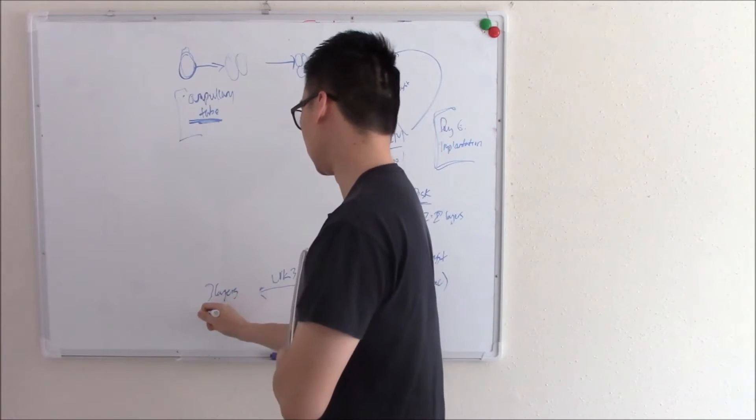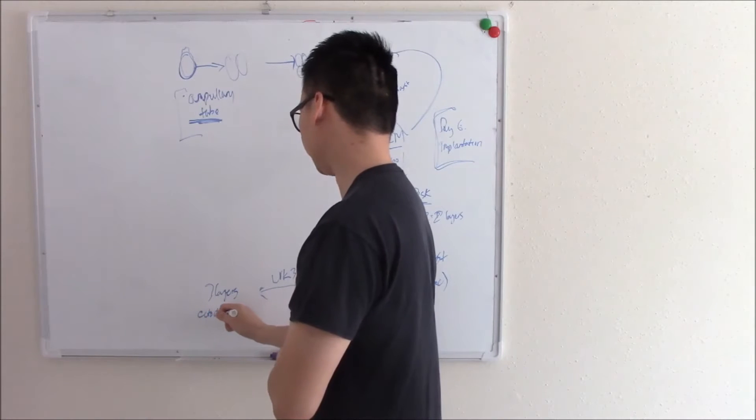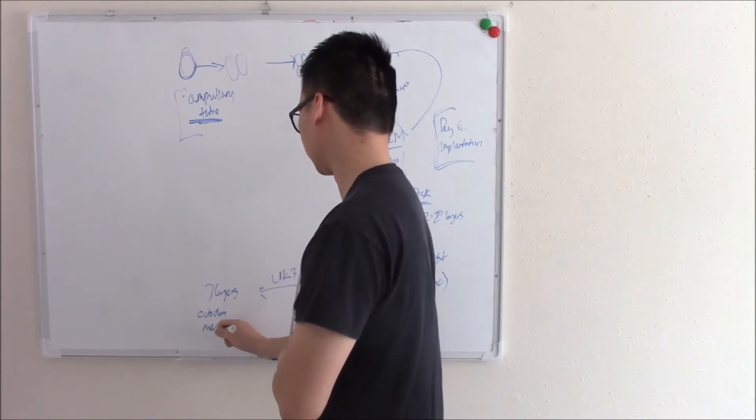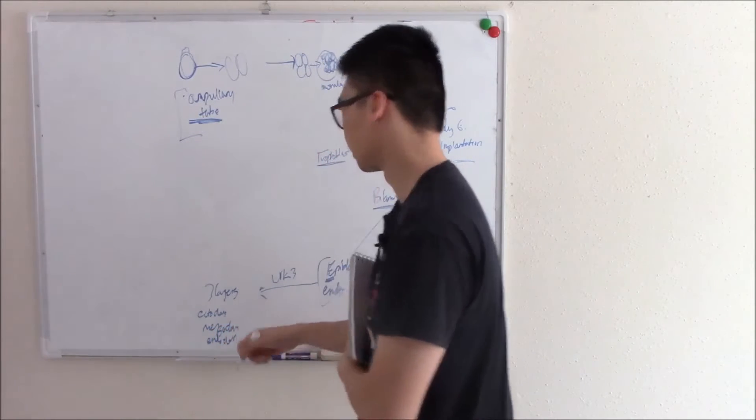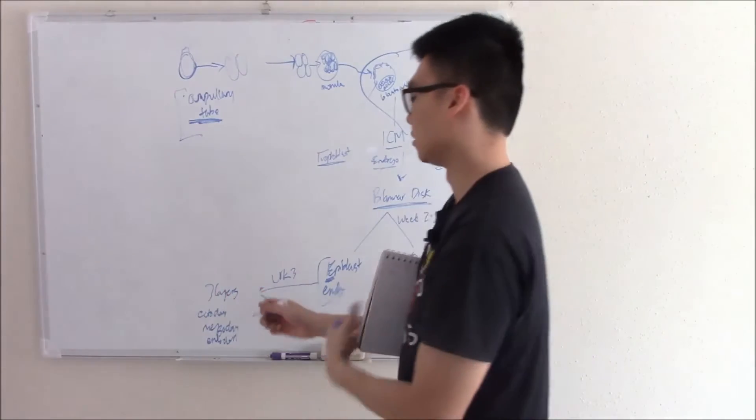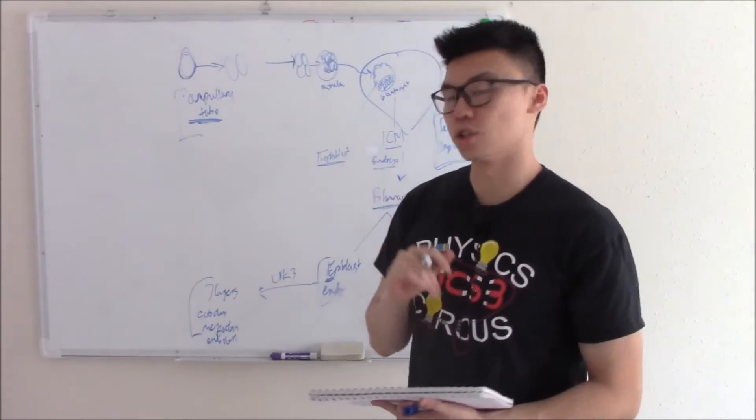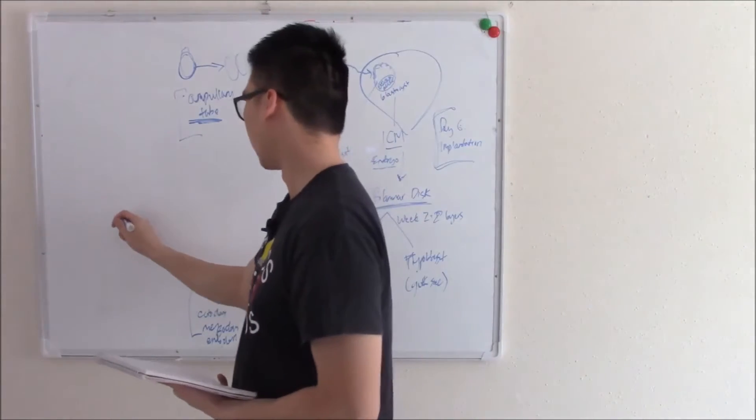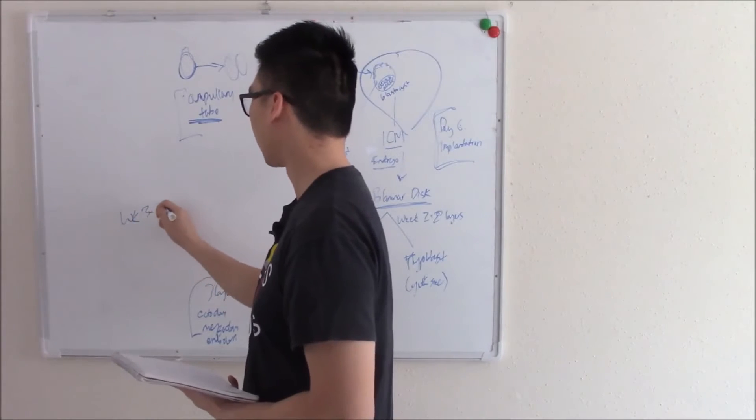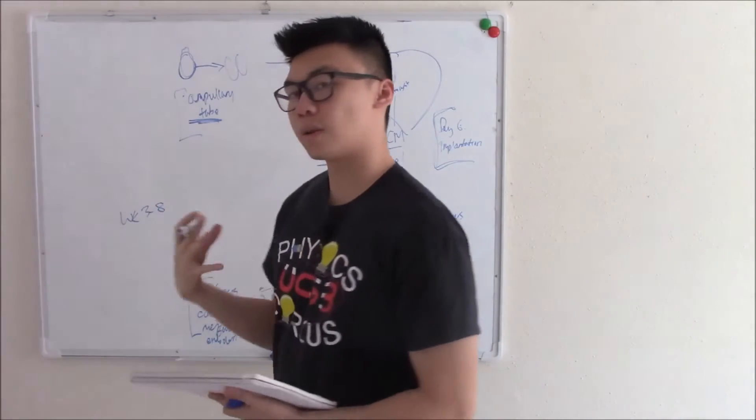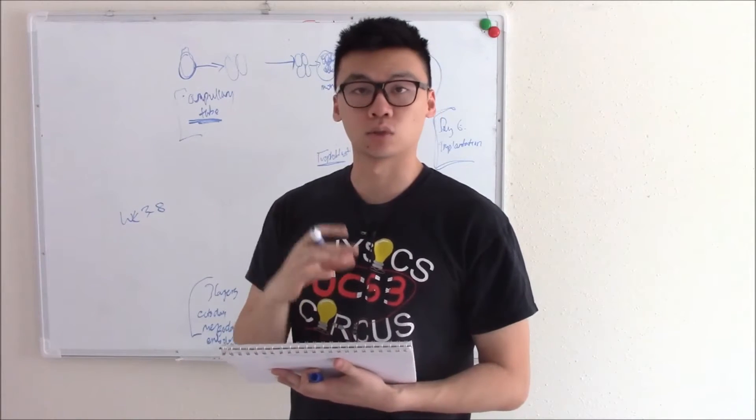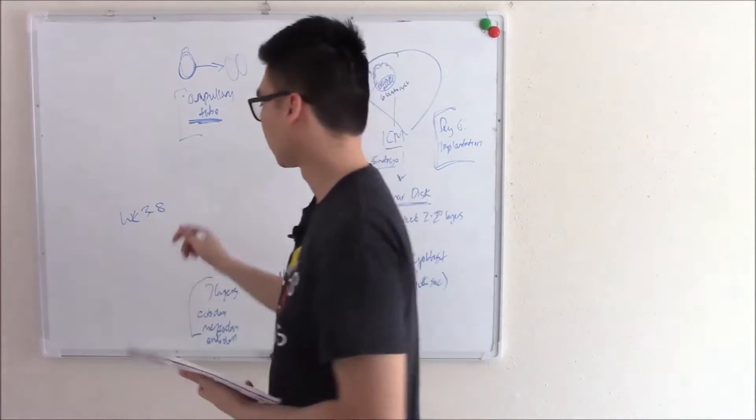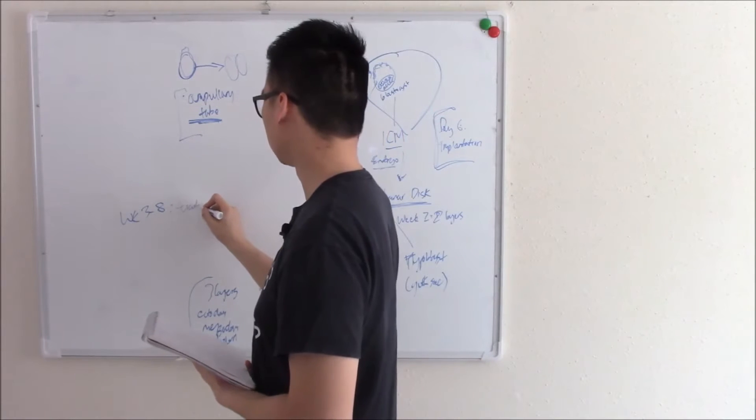These are going to be your ectoderm, mesoderm, and your endoderm. They'll ultimately become your embryo. And key points in development that you should know is that from week three to eight, your embryo is growing, his organs is growing, his limbs, so it is very susceptible to teratogens.